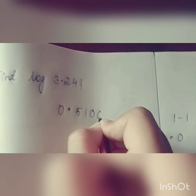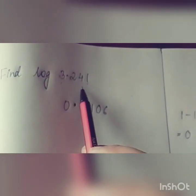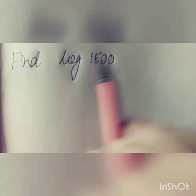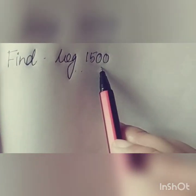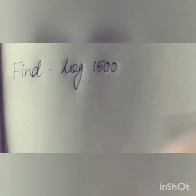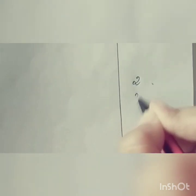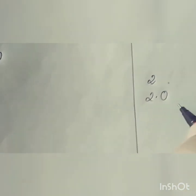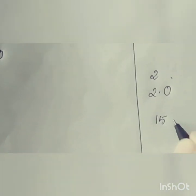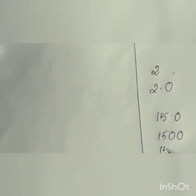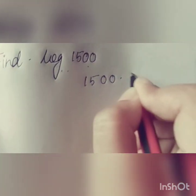So the log of 3.241 is 0.5106. Let us solve another sum — find log of 1500. You can see there is no decimal point, so we will have to put one. If there is 1500, you can easily write it as 1500.0 — both are exactly the same.